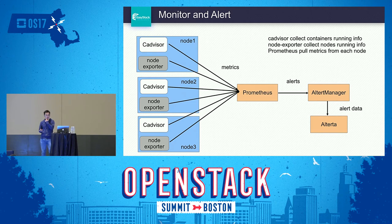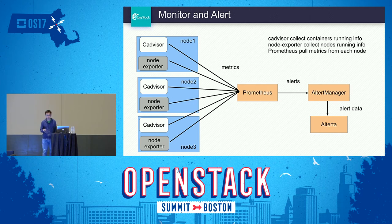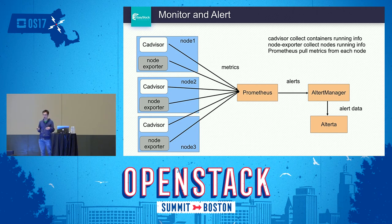Next, we talk about monitoring and alerting. We use Prometheus for that. AlertManager and Alertmanager plugins are part of the Prometheus stack. On each node, we run cAdvisor and NodeExporter. cAdvisor is integrated into Kubernetes, and NodeExporter runs as a DaemonSet. cAdvisor collects container running information, and NodeExporter collects node running information. Prometheus pulls metrics from each node, and you can define alerts using Prometheus rules. Prometheus pushes alert info to AlertManager, and AlertManager pushes the alert data to the alerting endpoint.